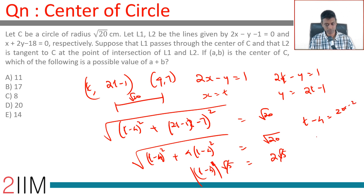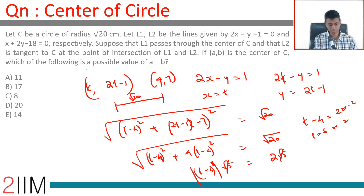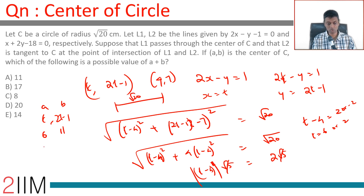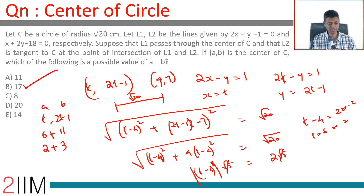So t = 6 or t = 2. For t = 6: the point is (6, 2·6-1) = (6, 11), giving a+b = 17. For t = 2: the point is (2, 2·2-1) = (2, 3), giving a+b = 5. So a+b could be 5 or 17. Since 17 is the valid answer, it is an absolutely delightful result.